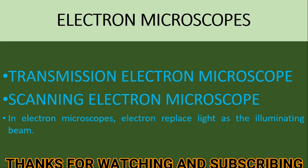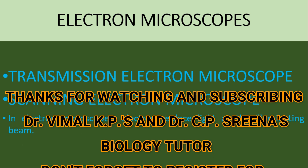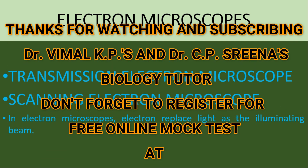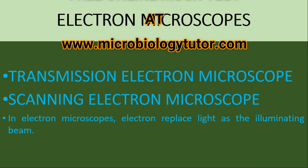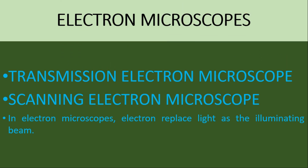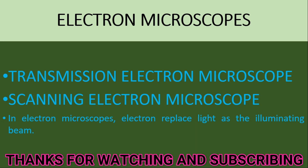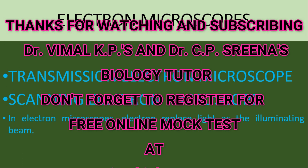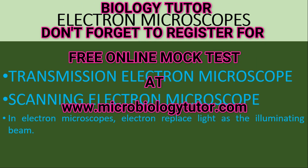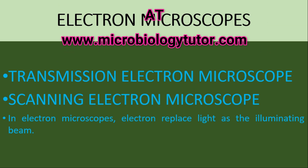Electron microscopes. There are two types: the first is the transmission electron microscope and the second is the scanning electron microscope. In electron microscopes, electrons replace light as the illuminating beam. In normal microscopes we use a light source, but here electrons are used instead of light.